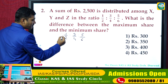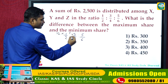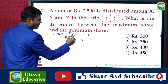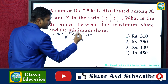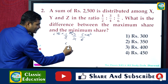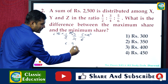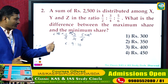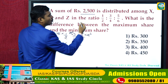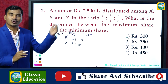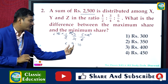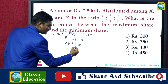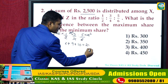The LCM of the denominators 2, 4, and 6 is 12. We multiply 12 to each ratio value and cancel: 12 × (1/2) = 6, 12 × (3/4) = 9, 12 × (5/6) = 10. So the ratio becomes 6 : 9 : 10. The total sum is 2500 rupees distributed in ratio 6 : 9 : 10, giving 25 units total.